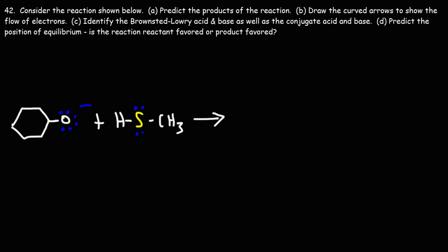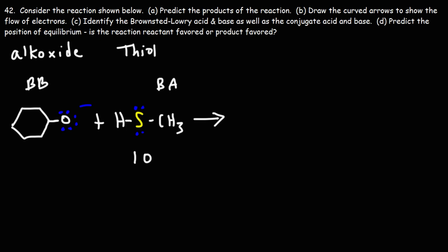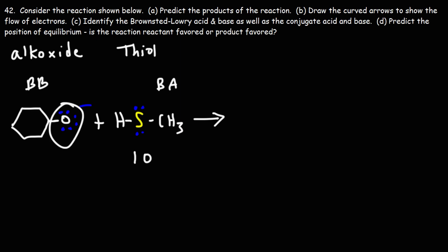Now let's move on to the second example. We should start by identifying the Brønsted-Lowry acid and base. Here we have an alkoxide ion — the conjugate base of an alcohol — and here we have a thiol; the pKa of a thiol is 10. Because the alkoxide has a negative charge, it's most likely to act as the Brønsted-Lowry base. The thiol is most likely to act as the Brønsted-Lowry acid — the proton donor — since it has a hydrogen to give away.